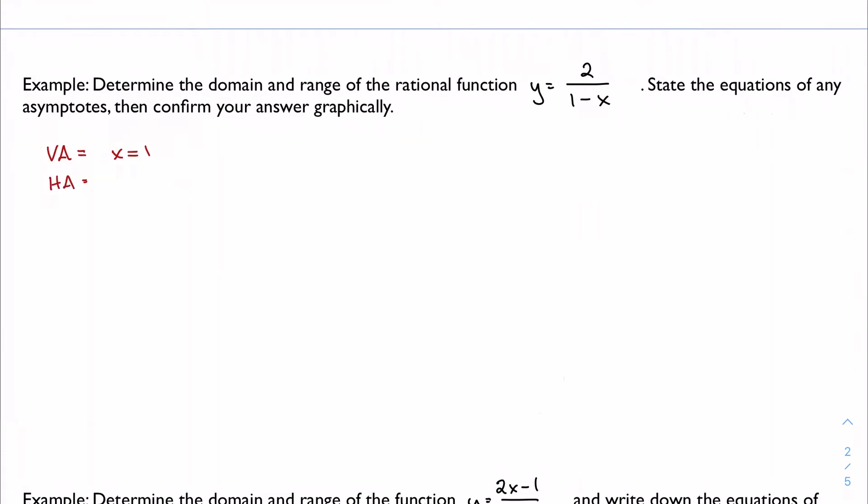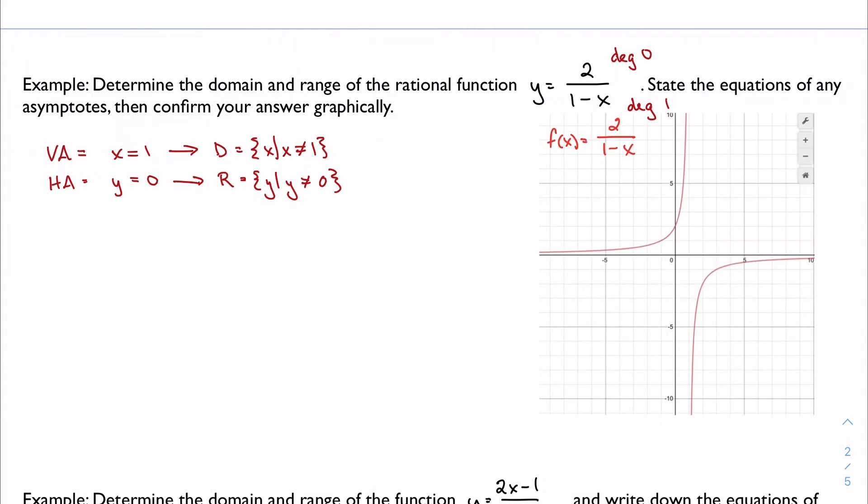Horizontal asymptotes: consider the degree of the numerator, which is 0 because it's a constant, and the degree of the denominator, which is 1 because I have a linear x term. I have numerator less than denominator, which means I have a horizontal asymptote at y equals 0. These inform our domain and range because they become exactly our domain and range. So all of the x such that x cannot equal 1, all of the y such that y cannot equal 0. Confirm your answer graphically: if I check this out, we can see that vertical asymptote at 1 and that horizontal asymptote at 0.